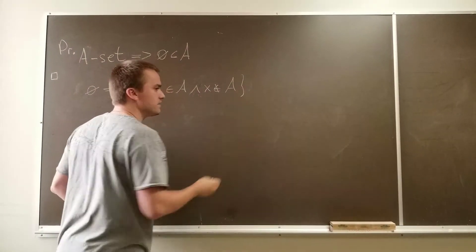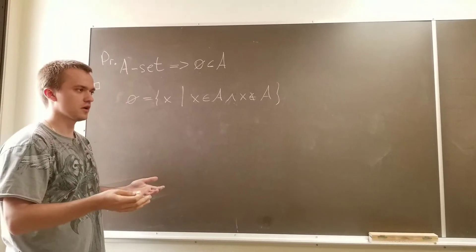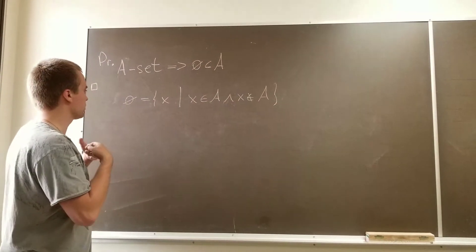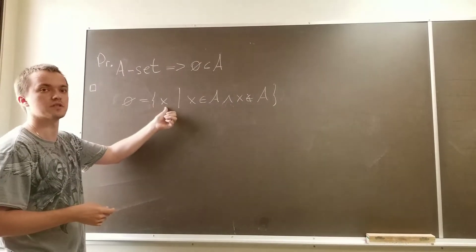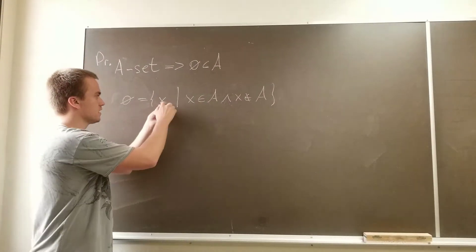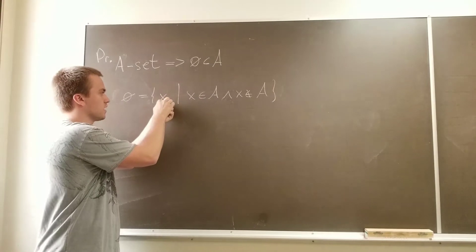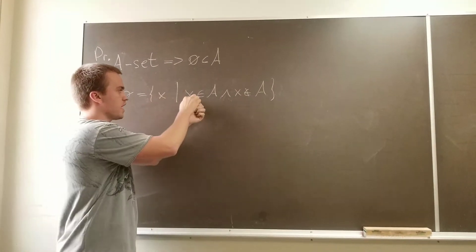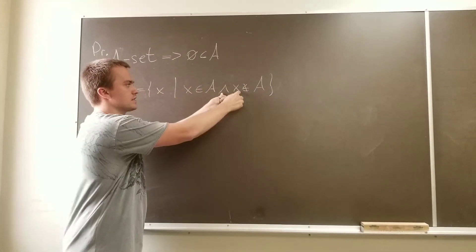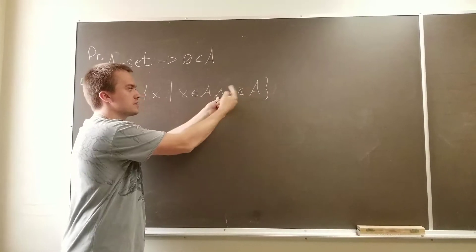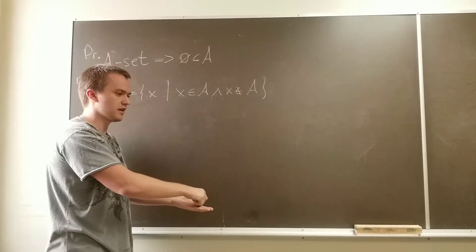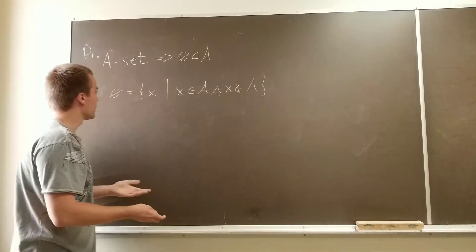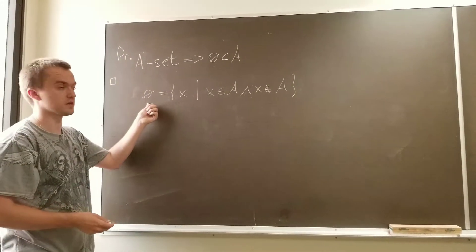And you know, empty set is a set which doesn't contain any elements. And you can see this is the actual definition of empty set. Why? Because there is no such element x. If there is one, it means x belongs to A and x doesn't belong to A. But it's a puzzle. Why? Because an element cannot at the same time be inside a set and outside of the set. So this is the definition of empty set.